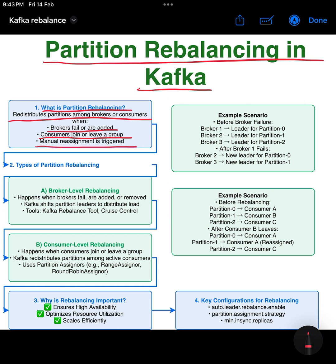Two: types of partition rebalancing. A: broker-level rebalancing. This happens when brokers fail, join, or are removed from the cluster. Kafka shifts partition leaders to maintain availability, and uses the Kafka Rebalance Tool and Cruise Control to automate redistribution.